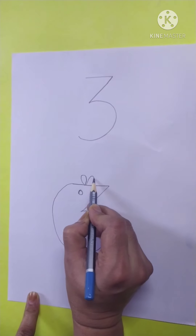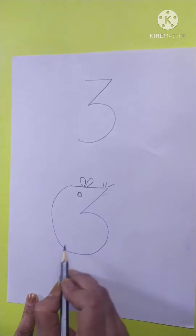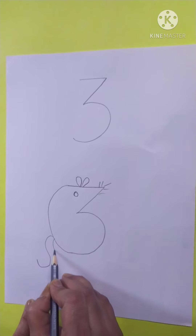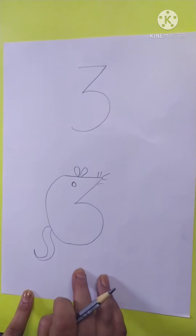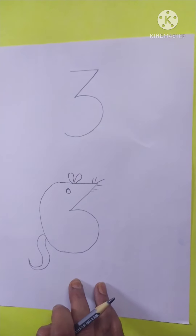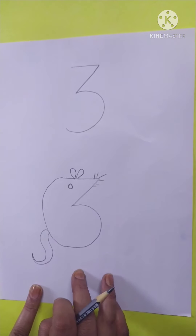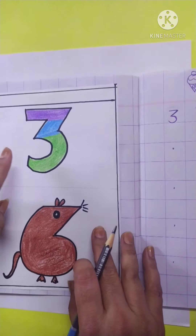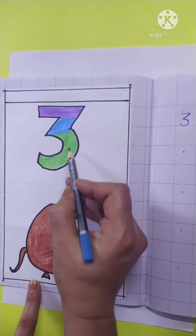We will draw it like this — making a circle shape. Now see which picture it looks like — it becomes a rat! This is a rat. Mama will draw it for you.